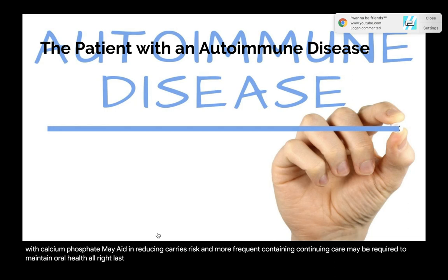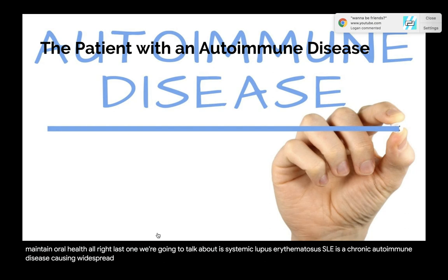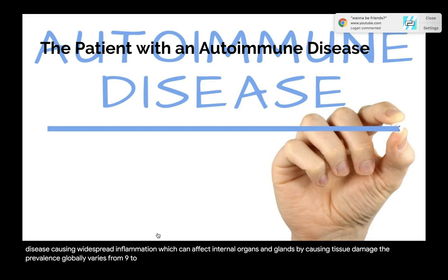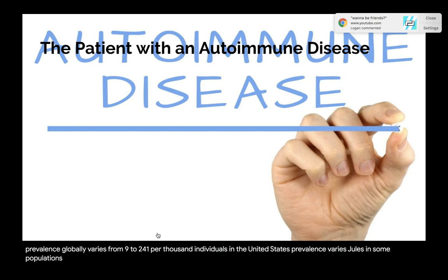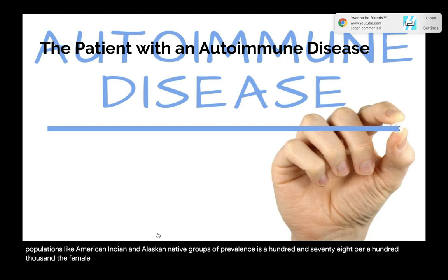Systemic lupus erythematosus (SLE) is a chronic autoimmune disease causing widespread inflammation that can affect internal organs and glands, causing tissue damage. Globally, prevalence varies from 9 to 241 per 100,000 individuals. In the United States, prevalence varies from 80 to 103 per 100,000; in some populations like American Indian and Alaskan Native groups, it is 178 per 100,000. The female-to-male ratio varies across the lifespan from 7–15 to 1. Hispanic and Southeast Asian populations tend to experience more severe disease and organ damage.